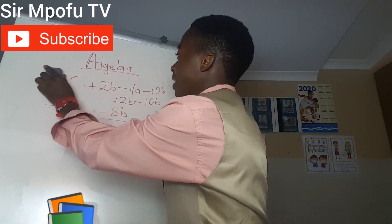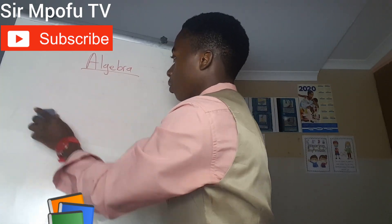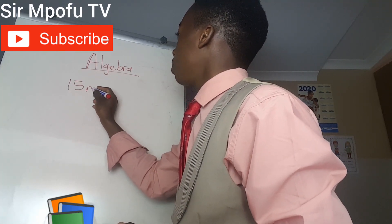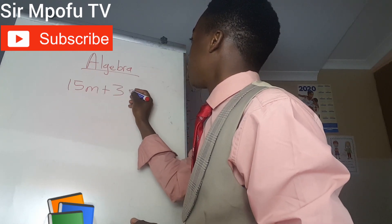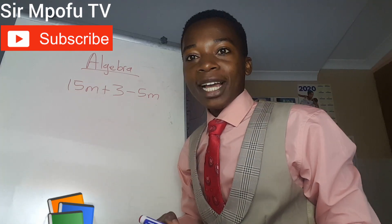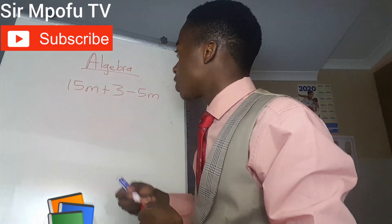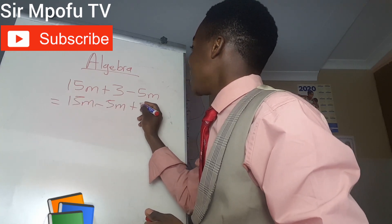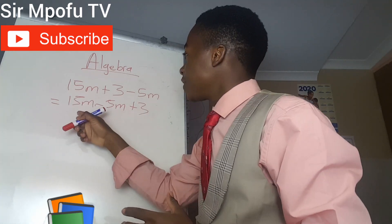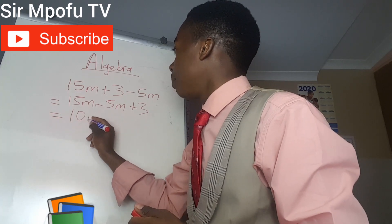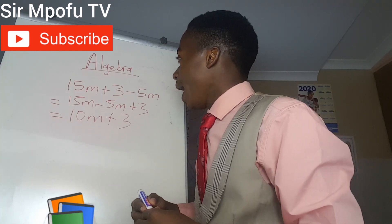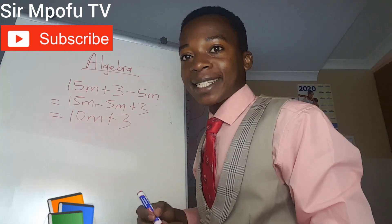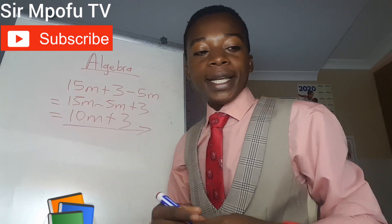Let's do another example. What if you have 15m plus 3 minus 5m? As I told you, collect like terms and simplify. We collect those with m: 15m minus 5m plus 3. So 15m minus 5m gives us 10m plus 3. Why don't we simplify further? Because that 3 doesn't have algebra, so they are not like terms. This is our final answer.